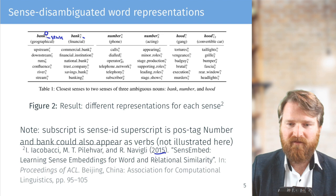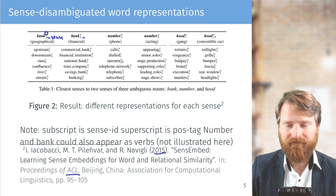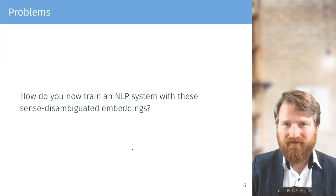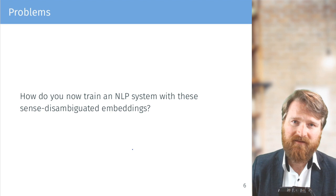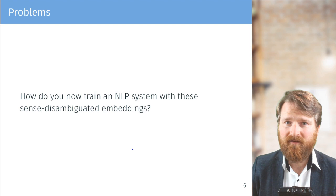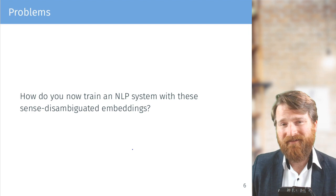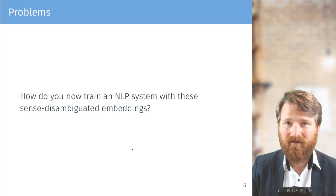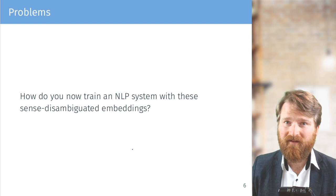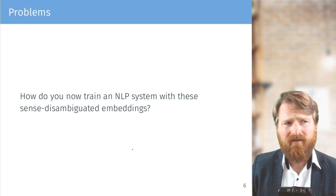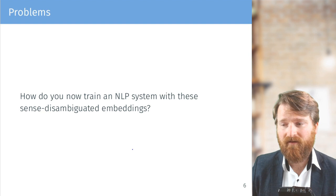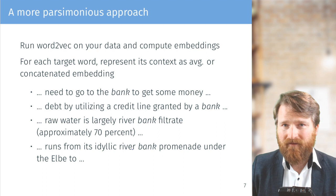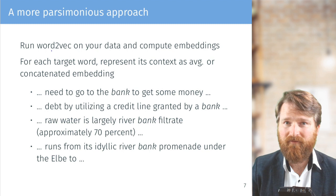This is taken from a 2015 ACL paper by Jauhar, Pilehvar, and Navigli. The big advantage of word2vec is that it runs on unlabeled data — just plain text. The sense-disambiguated approach requires a very special corpus that must be created manually or semi-automatically and doesn't scale. So how can we approximate this without all the manual requirements?